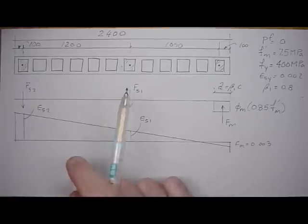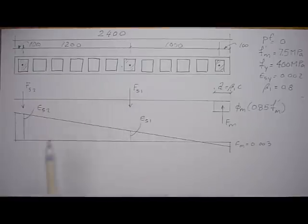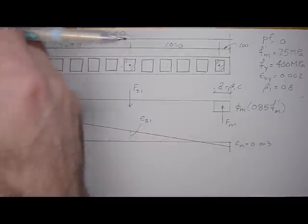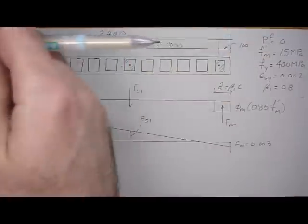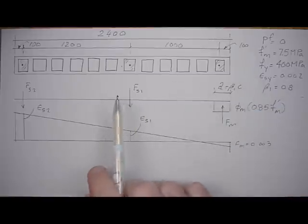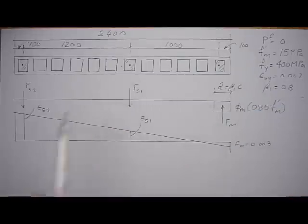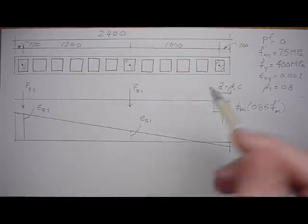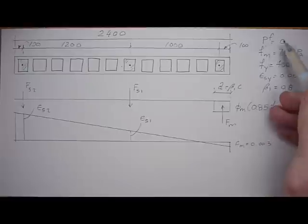Today we have a masonry shear wall design problem. The forces are in-plane and the purpose of the shear wall is to resist lateral loading in a building. We're going to assume that the joists are parallel to the direction of the shear wall, so the axial load on it is going to be negligible — zero.